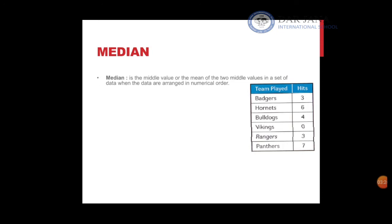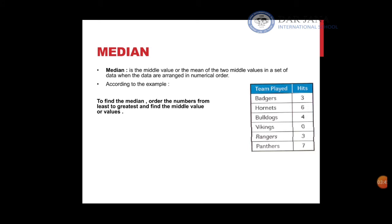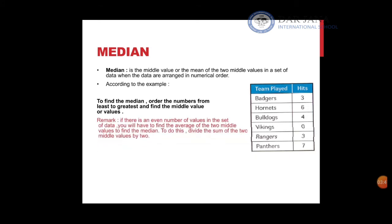To calculate the median, think of it as the middle value — the value found exactly in the middle of the data set after arranging it from least to greatest. To find the median, start by arranging your data from least to greatest. The data from the table arranges as: 0, 3, 3, 4, 6, 7.